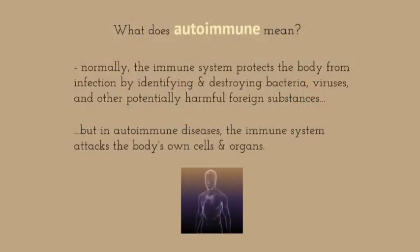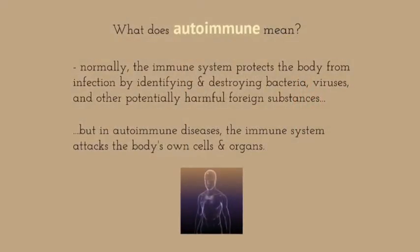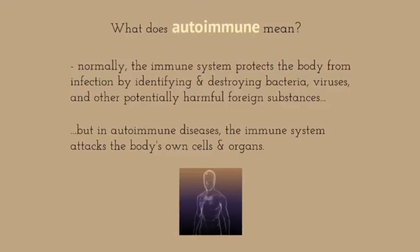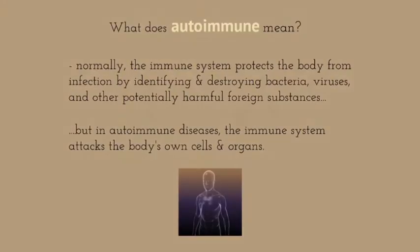Normally, the immune system protects the body from infection by identifying and destroying bacteria, viruses, and other potentially harmful foreign substances. But in autoimmune disease, the immune system attacks the body's own cells and organs.